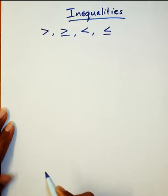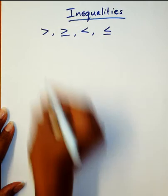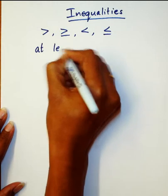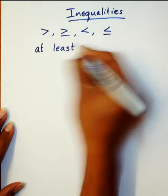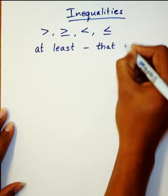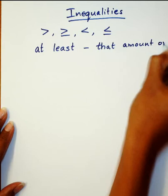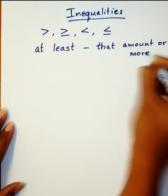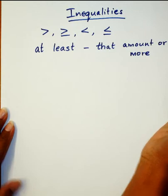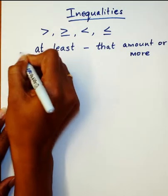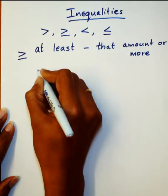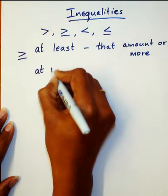And there are two phrases that you may want to remember. They are at least, which means that amount or more. Like you have at least five candies, which means you have five candies or more than five candies. So the symbol to represent that would be greater than or equal to.